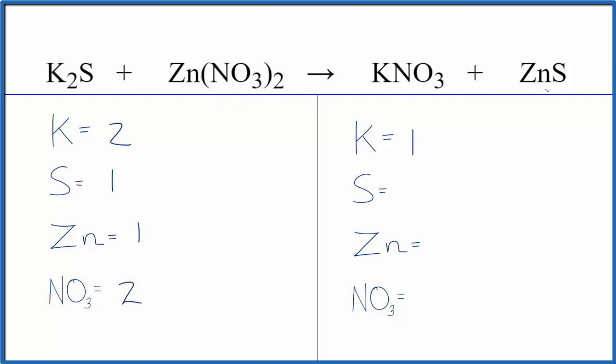Product side, one potassium, one sulfur, one zinc, and then just one nitrate ion.